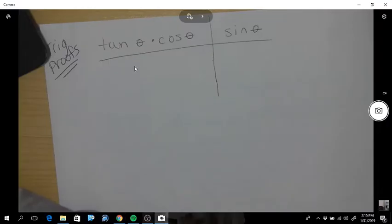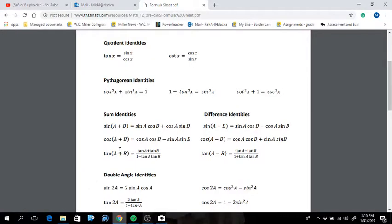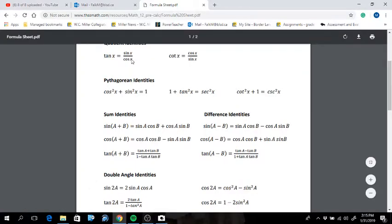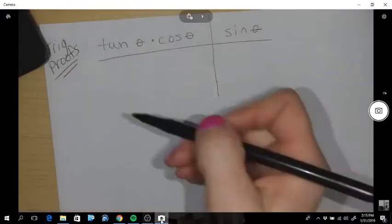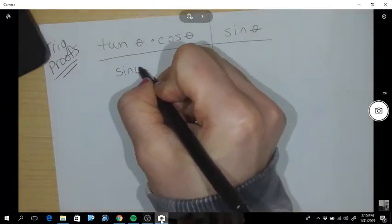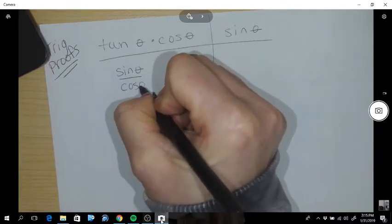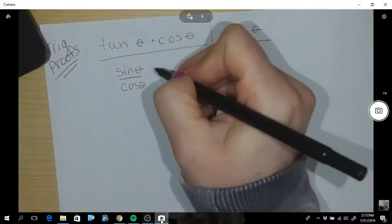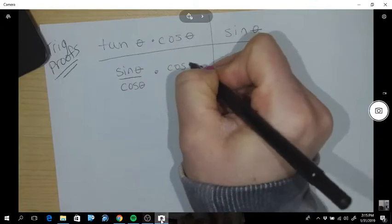So for instance this tan angle, I'm going to replace it with this fraction sine angle cos angle. So I'm going to go sine angle over cos angle because I replaced this tangent times cos angle.